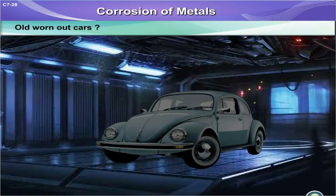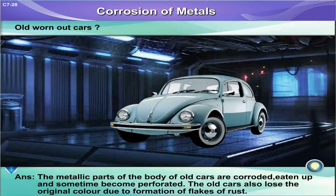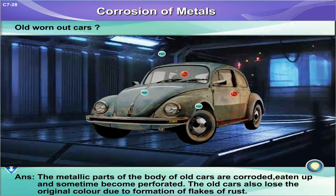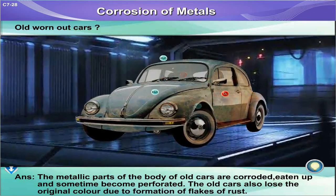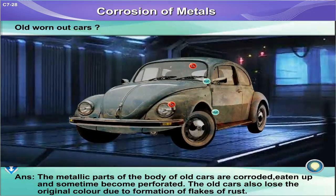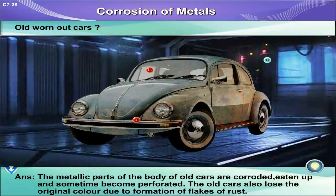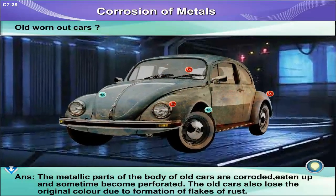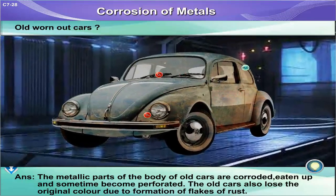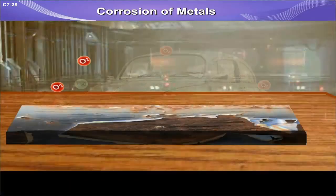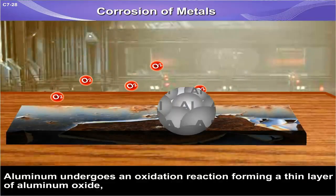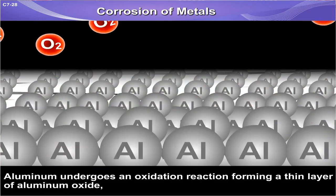The metallic parts of the body of old cars are corroded, eaten up, and sometimes become perforated. Old cars also lose their original color due to the formation of flakes of rust.